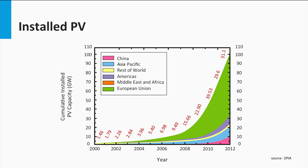The Asia-Pacific region, shown in light blue, is a good second, where most of the PV power is installed in Japan. The pink color corresponds to China, which shows an unprecedented increase in the installed PV capacity from 2010 to 2012.